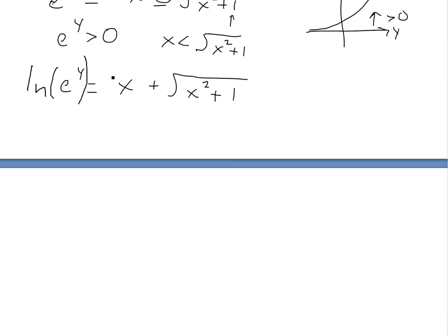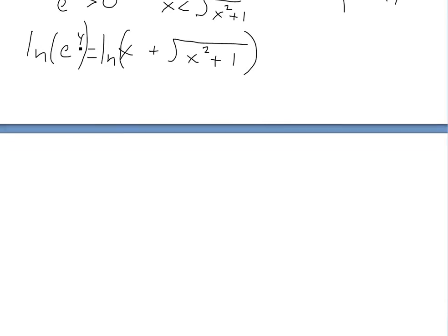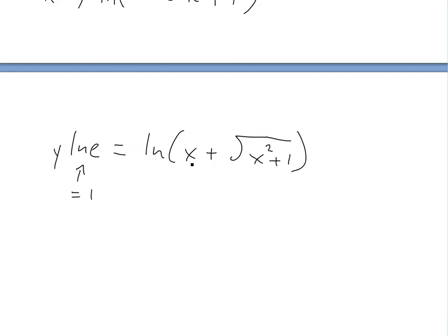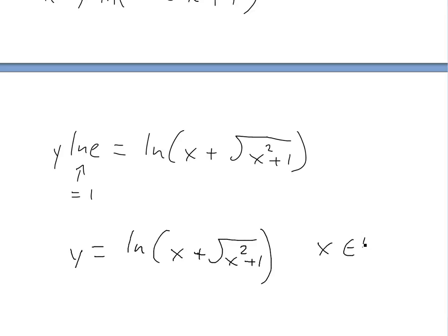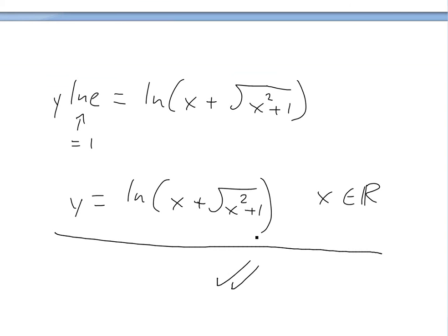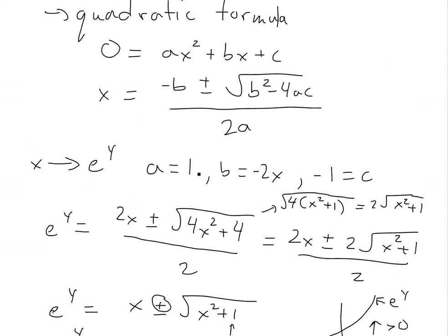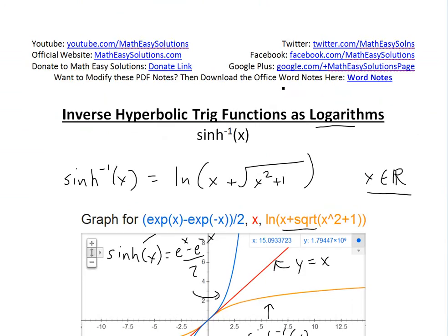Taking the natural log of both sides — which we can do without affecting the equation — and applying log rules, ln(e^y) = y · ln(e) = y · 1 = y. So y = ln(x + √(x² + 1)), with the domain being all real numbers. That's our final answer. Thanks for watching — download the notes via the Dropbox link below, and stay tuned for another Math Easy Solution.